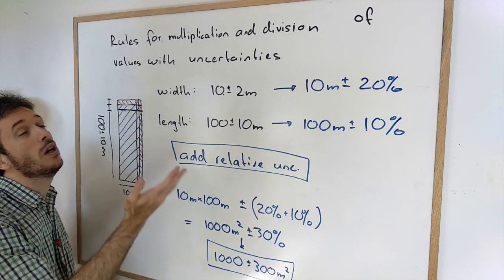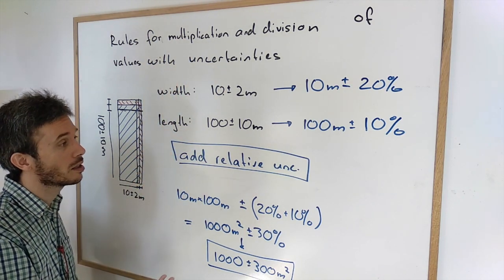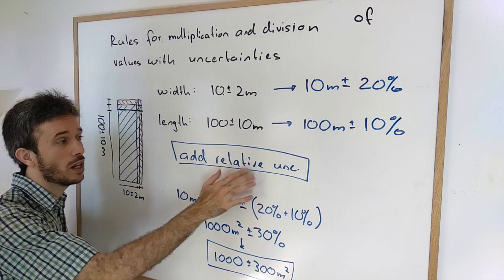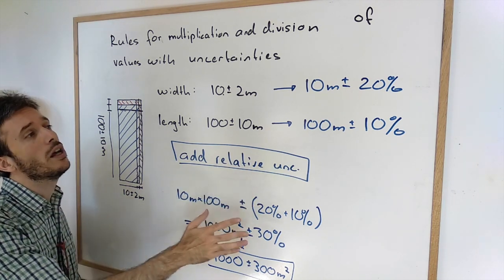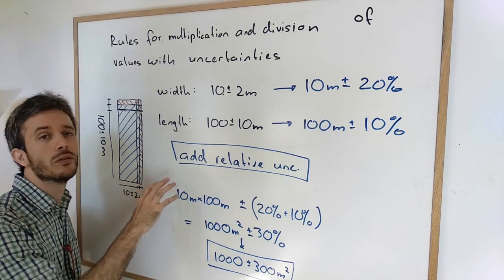So if you have to multiply or divide certain things with uncertainties, add the relative uncertainties. If you want to add and subtract, you add the absolute uncertainty.